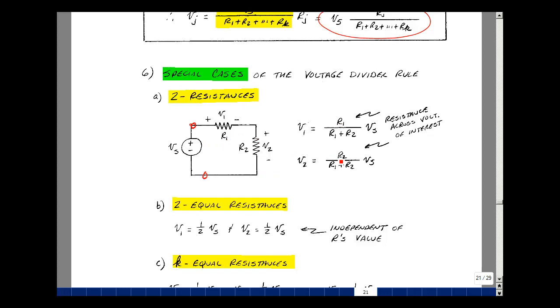And likewise, V2 is R2 divided by R1 plus R2 times the voltage V sub s. We could just say this in words that the voltage across the resistance R1 shows up in the numerator divided by the sum of the resistances.